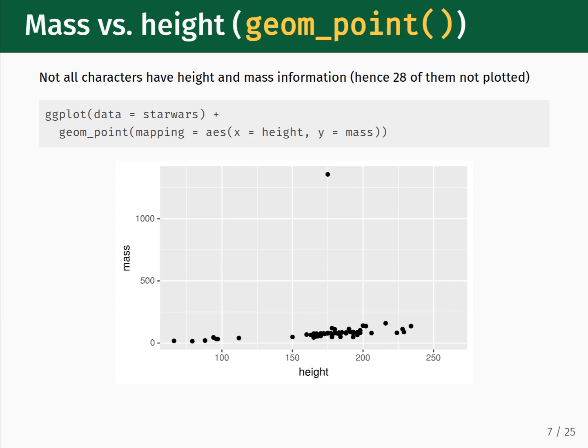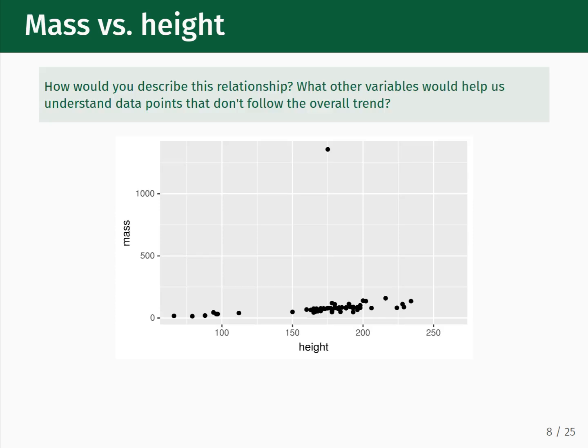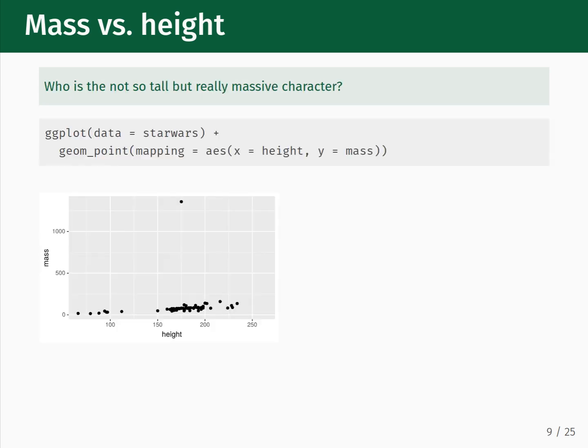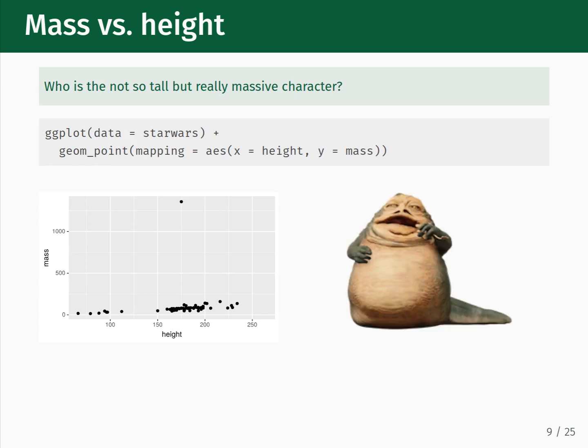Note that this plot does not show every character in the database. In this instance, 28 characters are not shown, as not every character has both a height and a mass provided. Focusing now on the data visualization itself, overall there appears to be a positive linear trend between the mass and the height, with one clear outlier in the dataset. The character's name and species would help us understand data points that don't follow the overall trend. Focusing in on the outlier — who is this tall but really massive character? It's Jabba the Hutt, and by knowing the character's species and name, we better understand where the outlier comes from.